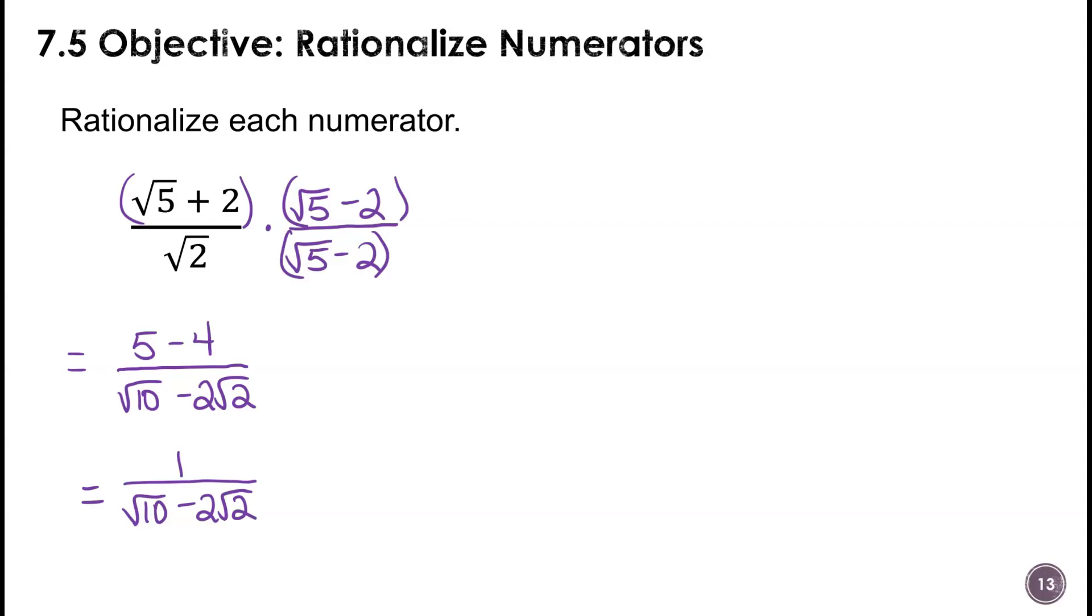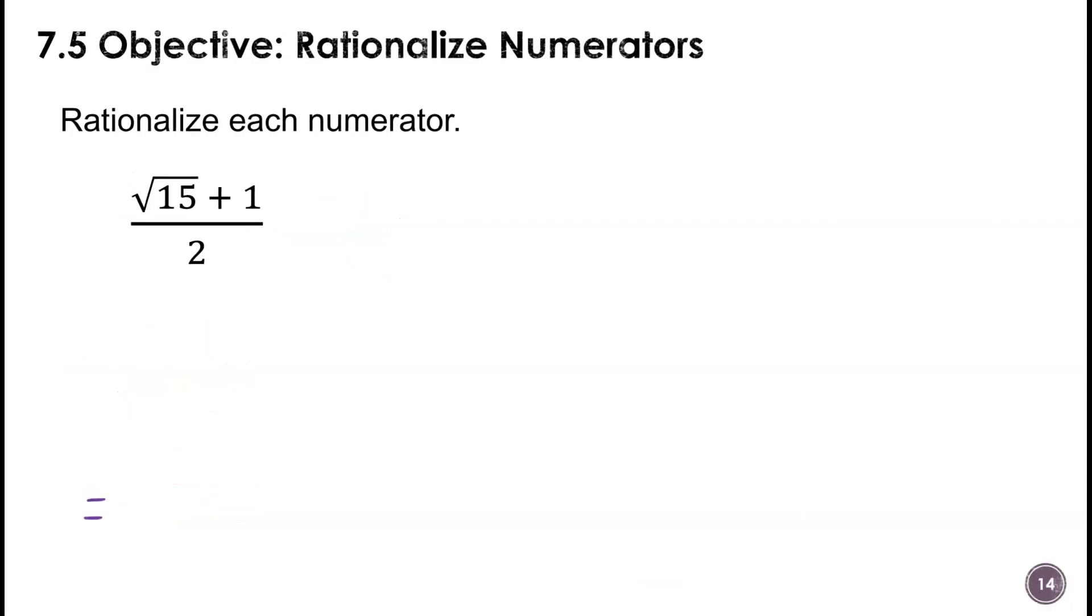Remember the process of rationalizing is to remove radicals, in this case from our numerator. So it's okay if we have some in the denominator, but when we finish, our numerator needs to be radical free.